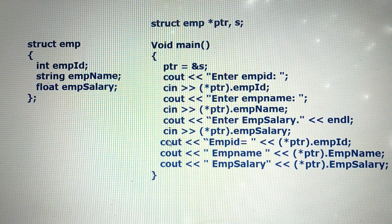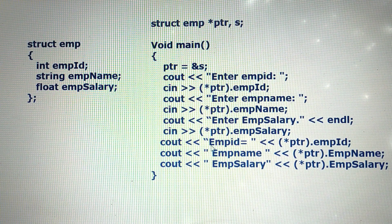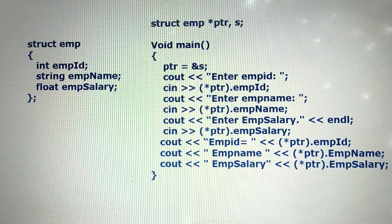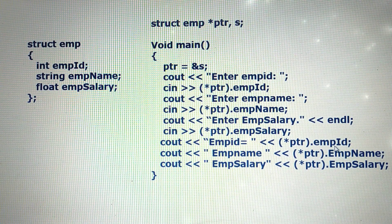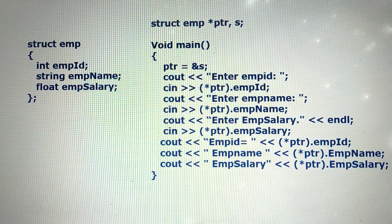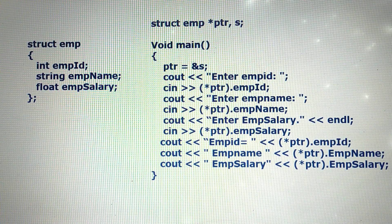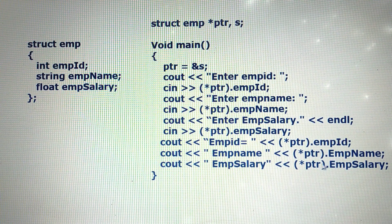The next step is to display the recorded details with proper headings. Give cout: employee ID equals pointer variable for employee ID. The format uses the pointer variable within brackets — pointer PTR dot link operator dot EMP ID. Another method is to use the arrow operator: PTR arrow operator employee. Both methods are equivalent. Then give the pointer variable for employee name linked with the pointer variable for employee salary.